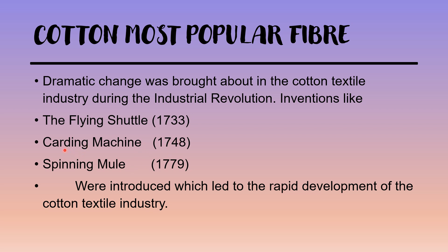In 1748, the carding machine was invented. This carding machine helped the fibers to be kept at the same length and also eliminated impurities present in the cotton. Besides this, the spinning mule, invented in 1779, helped in producing cotton yarn and thread. Work became faster and high quality yarn was produced, all of which led to the rapid development of the cotton textile industry.